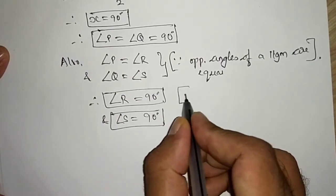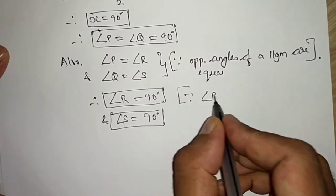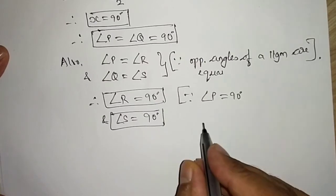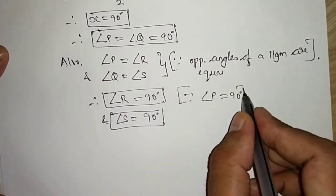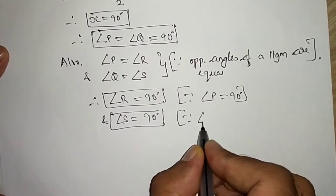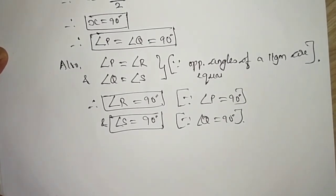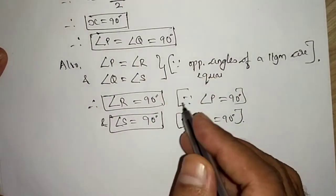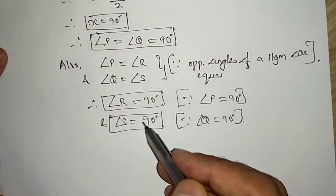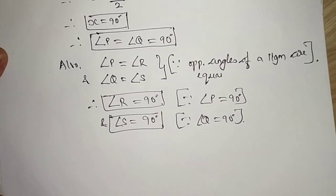We have to give reason: because angle P is equal to 90 degrees and angle Q is equal to 90 degrees. So we have got all the measures P, Q, R, S, all are of 90 degrees each, and we have found all the measures of angles of the parallelogram.